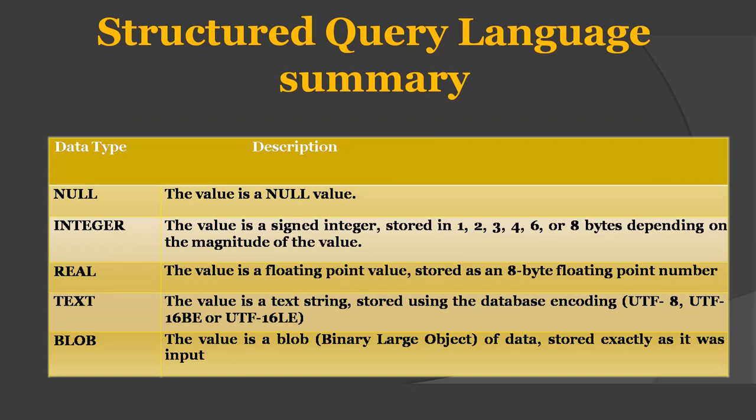Next we have a table representing data types in SQL. Every RDBMS uses its own set of data types for attribute values. SQLite uses the following data types: NULL represents a null value; INTEGER represents a signed integer; REAL represents an 8-byte floating point number; TEXT represents a text string; and BLOB represents binary large objects of data, which is stored exactly as it was input. Examples of BLOB data include Word documents, PDF invoices, photos, product images, and so on.